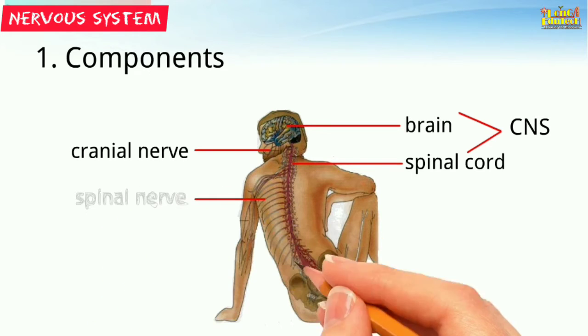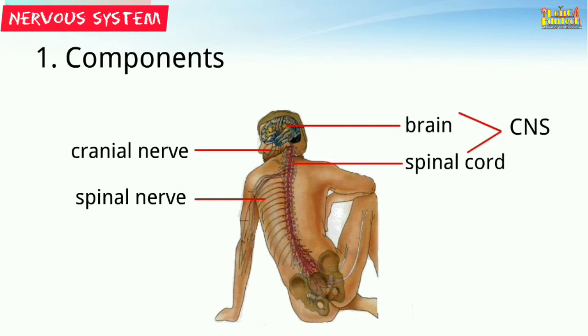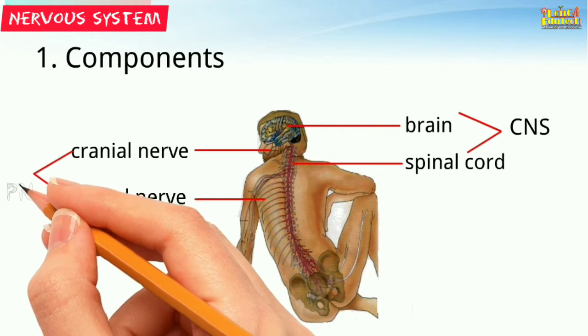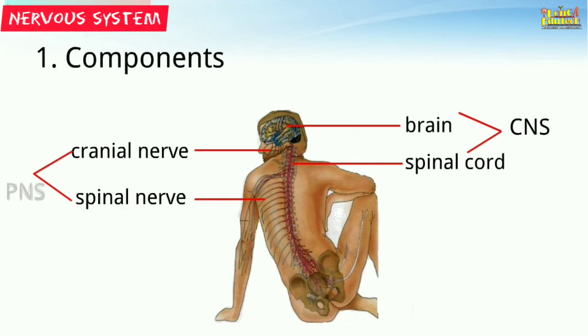The cranial nerves and spinal nerves together are called the peripheral nervous system. These are some of the main components of the nervous system.